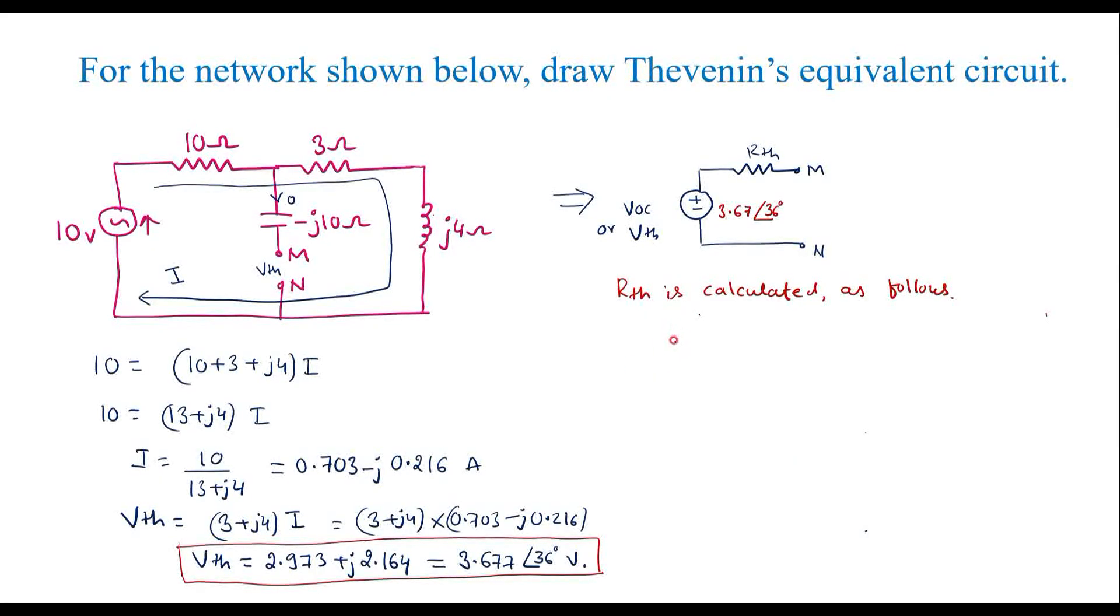I can draw the equivalent circuit here. That is, this is 10 ohm resistor which is connected as it is. Here this point is shorted. There was a voltage source here, and here this is a capacitor with value minus J10 ohm capacitor reactance. Here this is M terminal, this is N terminal, and I can show it in series with 3 and J4 ohm.